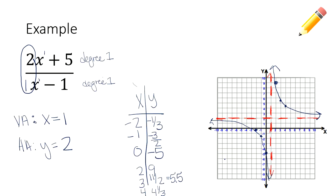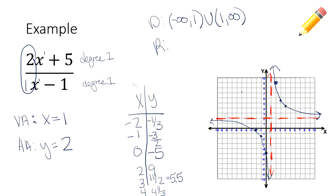Now what about domain and range? My domain covers all values except 1, so I have negative infinity to 1 union 1 to infinity. I am not including 1, because we are unable to cross over it. For range, the only value I cannot cover is 2, so I go from negative infinity to 2 union 2 to infinity. Remember, that U means union — these two pieces together make my domain.